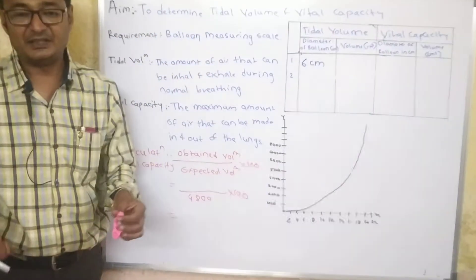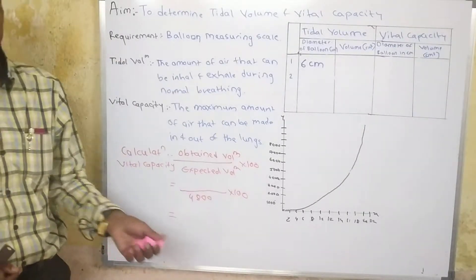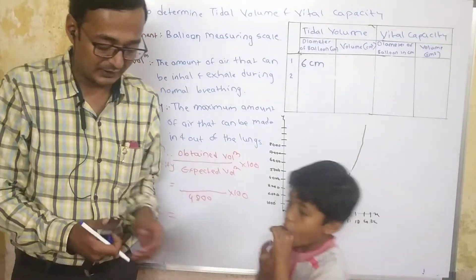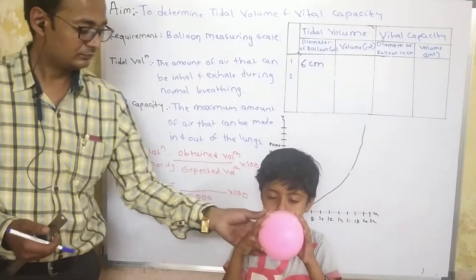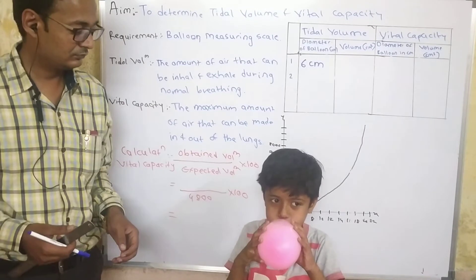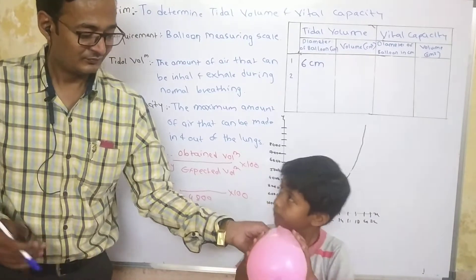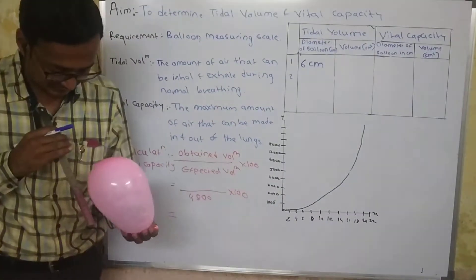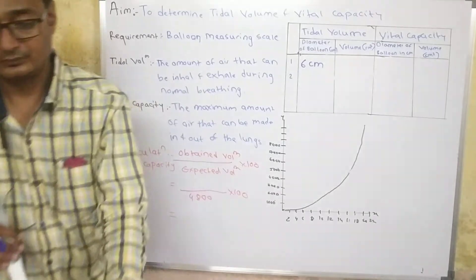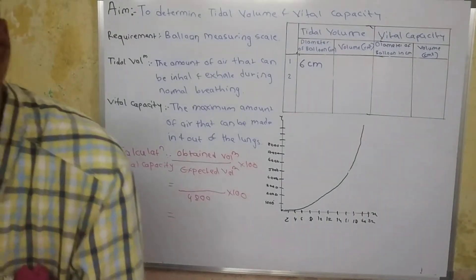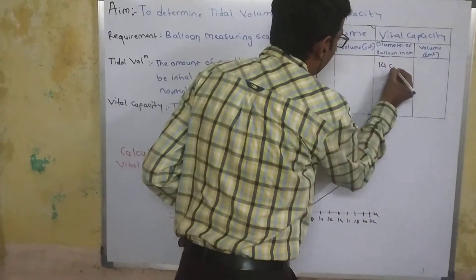Now we will calculate the vital capacity, which is the maximum amount of air which can be exhaled out from the lungs during respiration. If we calculate the diameter, it is around 14 cm. We will mark it here and write down 14 cm.